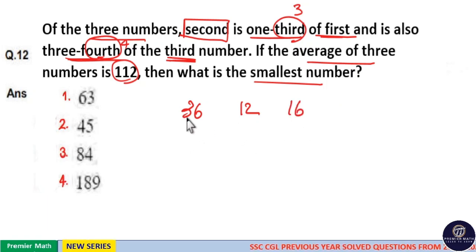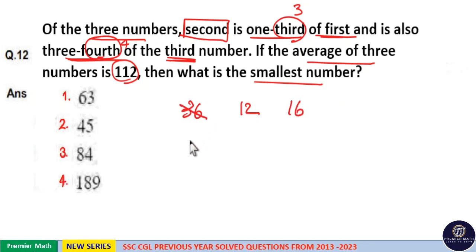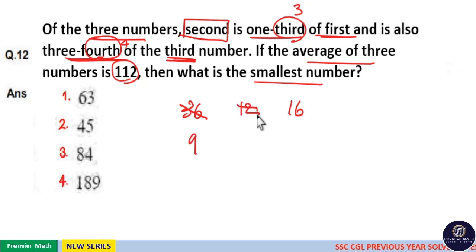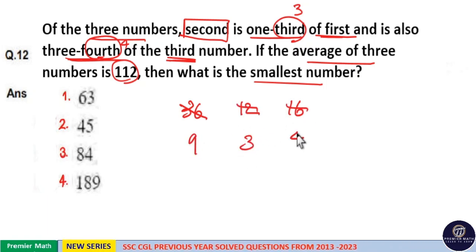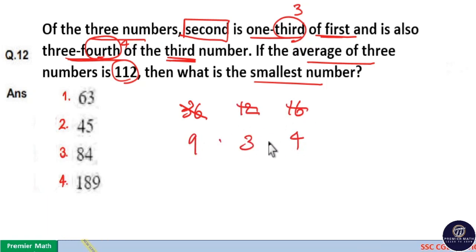Now if you take the ratio: four goes nine times into thirty-six, four goes three times into twelve, and four goes four times into sixteen. So the ratio is nine to three to four.